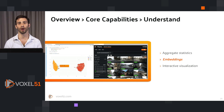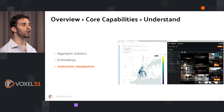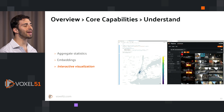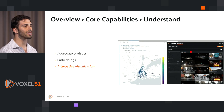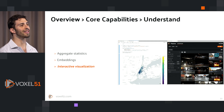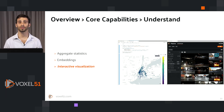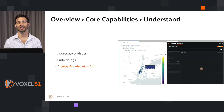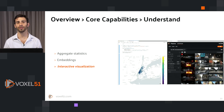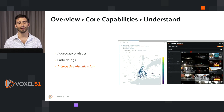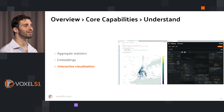Another key principle of FiftyOne is interactivity. In the embeddings plots, you can lasso select a particular cluster and see the corresponding images appear in the sample grid. This extends to other visuals as well. In this example, images have a geolocation attribute associated with them, and in the map plot you can select a particular region on the map and see the images corresponding to those locations pop up in the FiftyOne app.